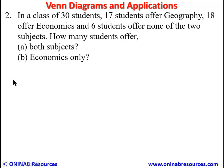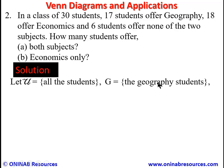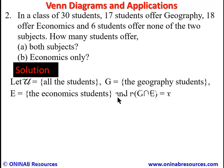Problem two: In a class of 30 students, 17 study geography, 18 study economics, and 6 study neither subject. Find (a) how many students study both subjects, and (b) how many study economics only. We use U for all students, G for geography, and E for economics. We let X represent the number of students offering both subjects, so n(G ∩ E) = X.